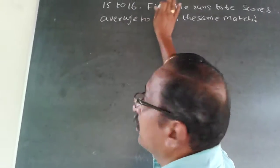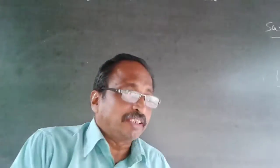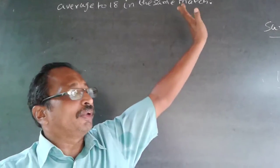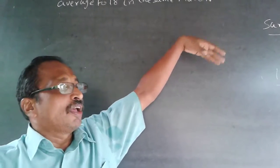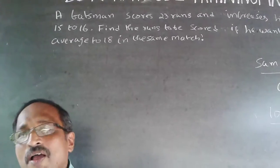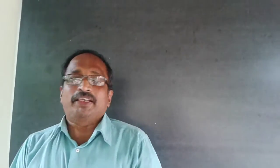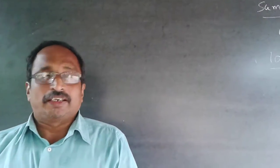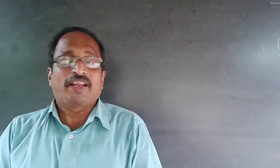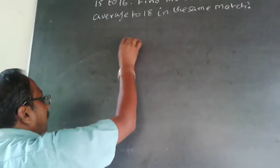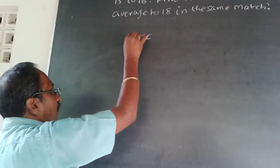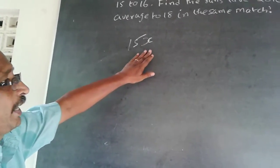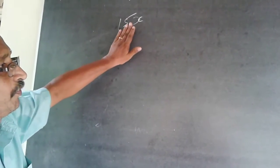Here the average is given but we do not know the number of matches. A new match is being played — you have to assume that because when he scores 23, his average is increasing, so it cannot be a continuation. His previous average is 15. We do not know the number of matches he has already played, so let the number of matches already played be x.